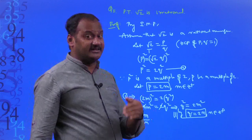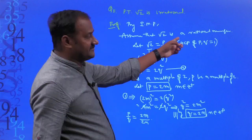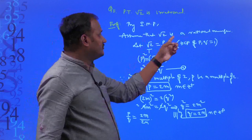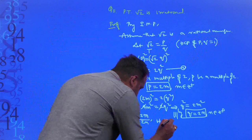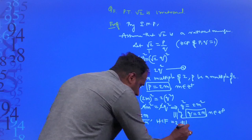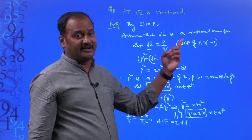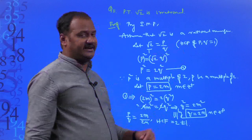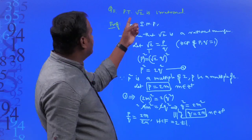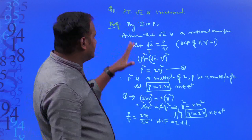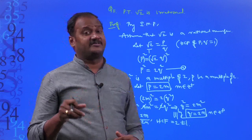We got HCF(p, q) = 2 instead of 1 — that is the wrong result, the contradiction. This contradiction is only because of our wrong assumption that √2 is a rational number. Therefore, our assumption is wrong. Therefore, √2 is an irrational number. This is one way of proving √2 (or √3, etc.) is irrational using the indirect method of proof.